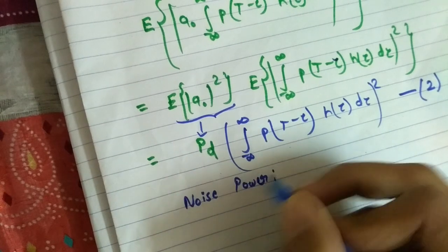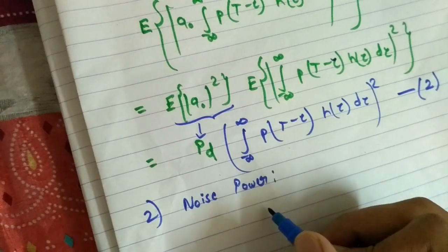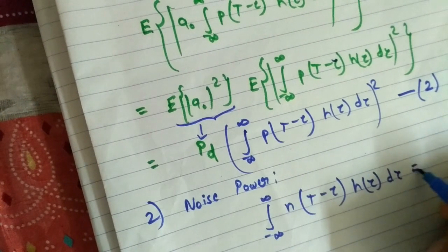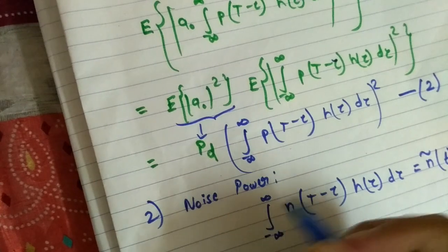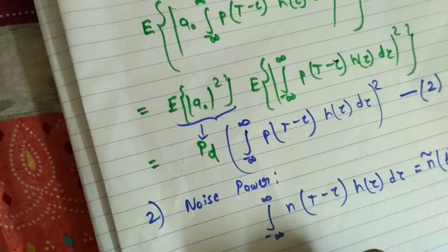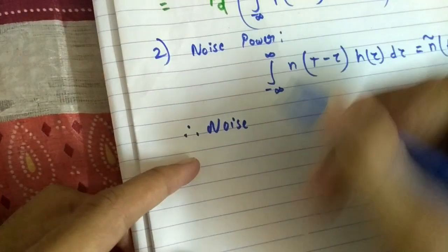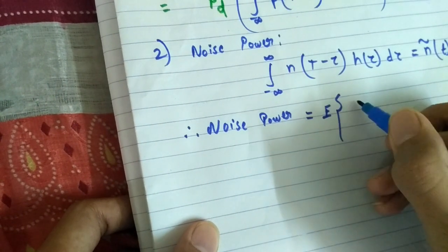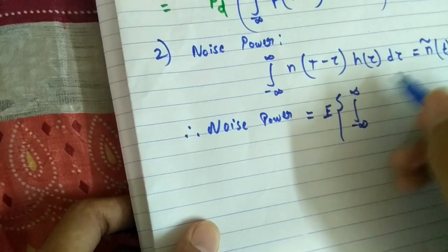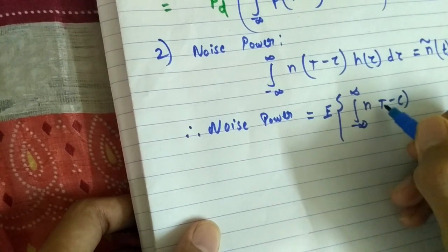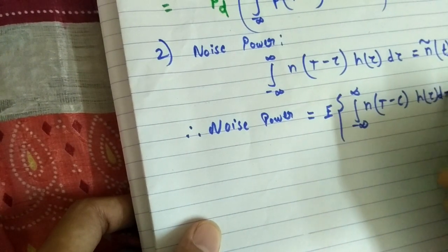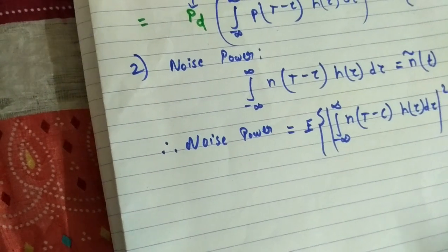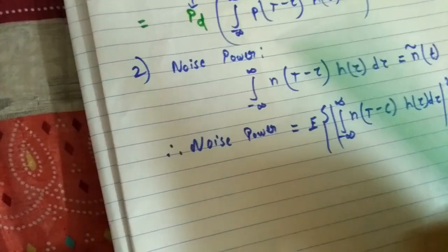Our next aim is to calculate noise power. The first step is over; now let's come to the second step. We know the noise signal is given by this — this is the noise signal, not noise power. Let's denote it by n_tilde(t). To find noise power, similar to signal power, we calculate the expected value. Noise power is nothing but the expected value of n_tilde(t) squared.